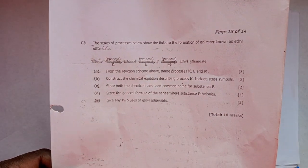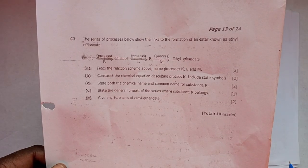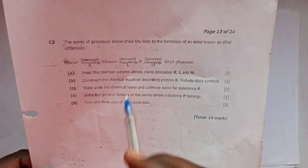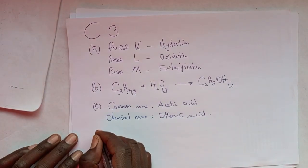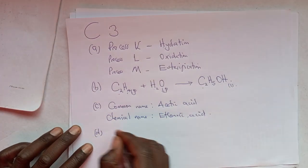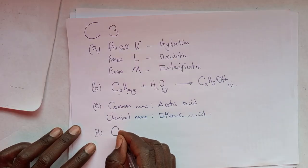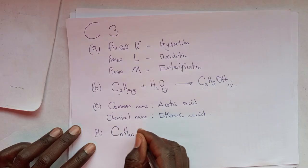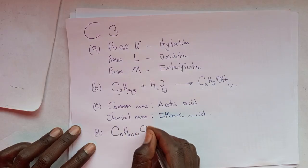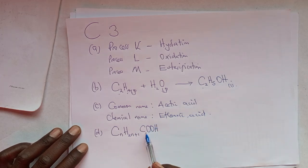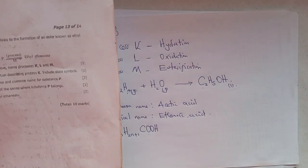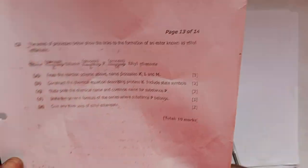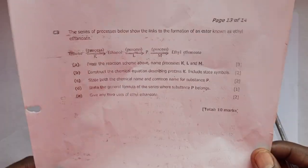Question D says state the general formula. The general formula is CnH2n+1COOH. Remember this is a carboxyl group or functional group which basically describes the chemical characteristics of all carboxylic acids, or organic acids.